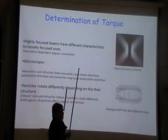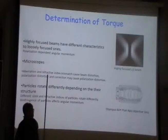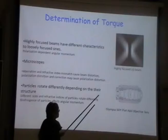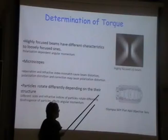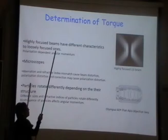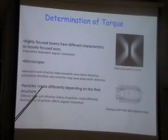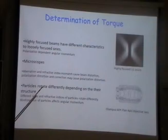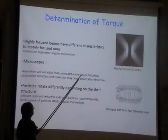A microscope objective is very difficult to control as far as aberrations go. You can pay a lot of money to get an objective corrected for most things, but that objective is only made to work at a certain focal plane. If you are not doing that, you will be introducing aberrations. So, aberrations and refractive index mismatches cause beam distortions, and polarisation correction may cause polarisation distortion as well.